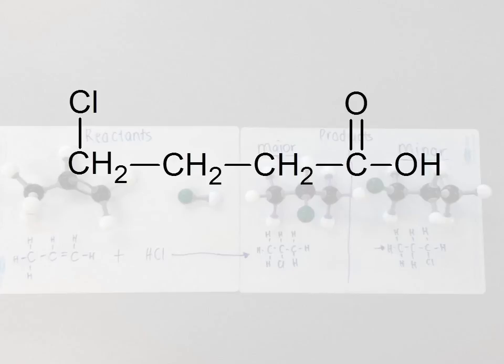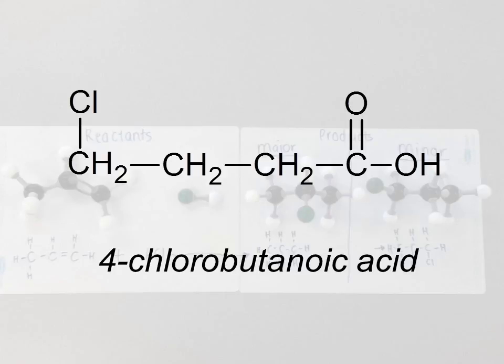This one here, a wee bit tricky. Again, a carboxylic acid. Now the key here in naming carboxylic acids is we always start our numbering from the end that has the carboxylic acid functional group. So in this case, our chloro is off the four carbon. So we have 4-chlorobutanoic acid.